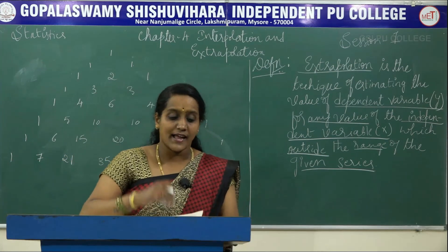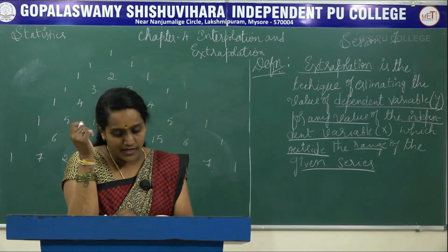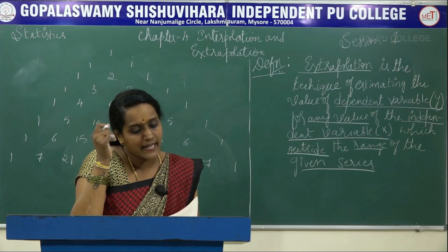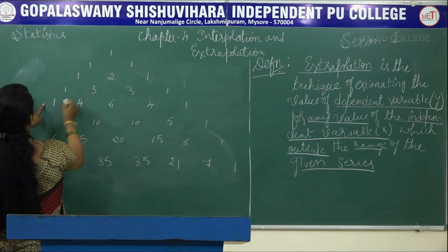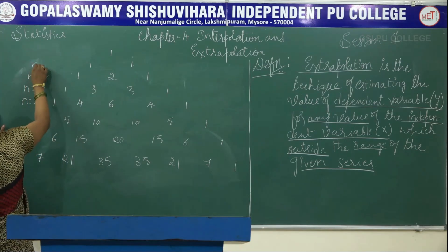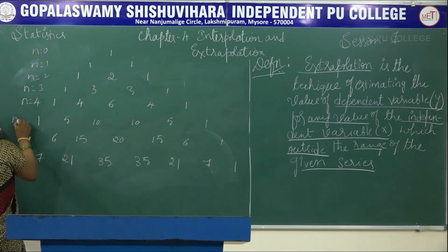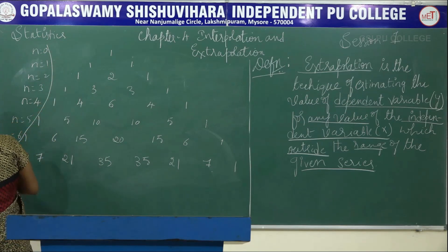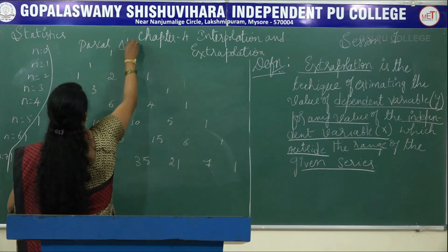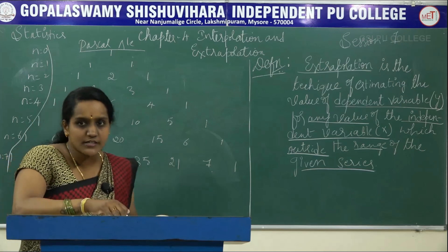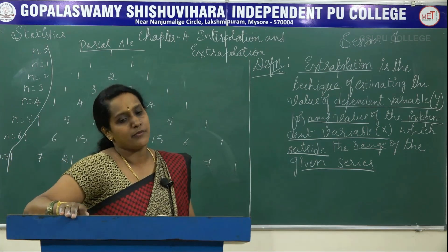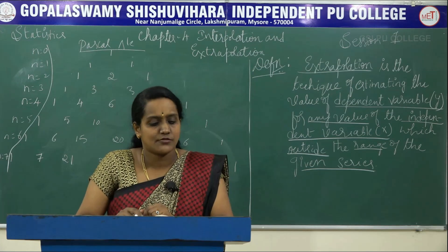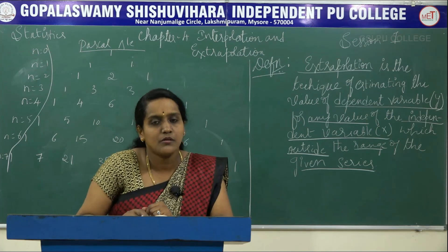This is the Pascal triangle. For different values of n, these are the coefficients used in the binomial expansion method. We will need this Pascal triangle in later classes, so follow it carefully. In the next class, we will solve problems based on these two methods. Thank you.